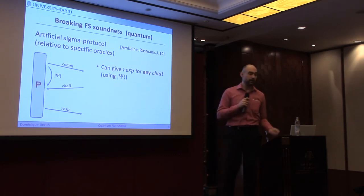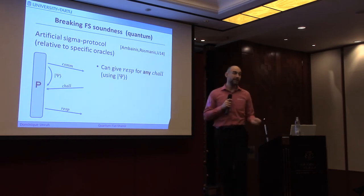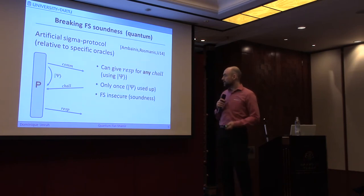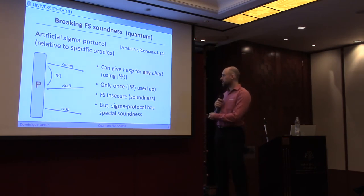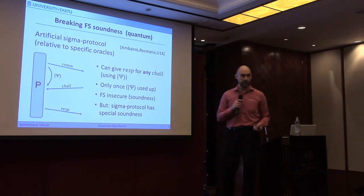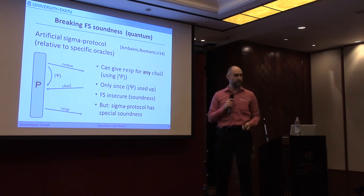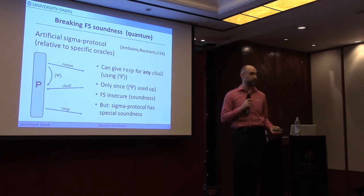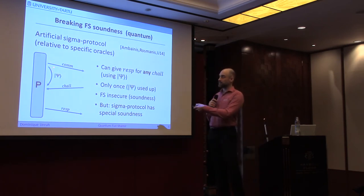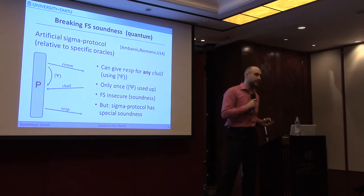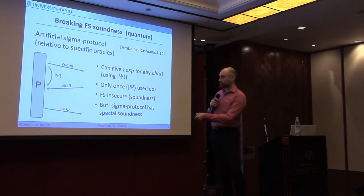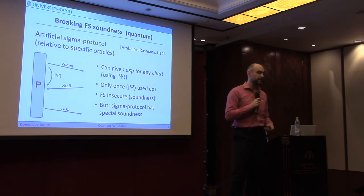You may say this is an insecure sigma protocol. But it turns out to be a sigma protocol that satisfies all the properties we usually expect — in particular, it has special soundness. How can that be? If we can answer any challenge with a correct response, then we should be able to get correct responses for two different challenges, which is what special soundness says we cannot do. Here comes the quantum aspect: this sigma protocol is carefully designed so that together with a commitment, we get a quantum state that allows a correct response, but only once. Computing the response destroys the quantum state, and since we cannot copy it, we can do this only once. So we can respond to any challenge we choose, but not to two challenges — and this example shows that Fiat-Shamir has a problem in the quantum setting.